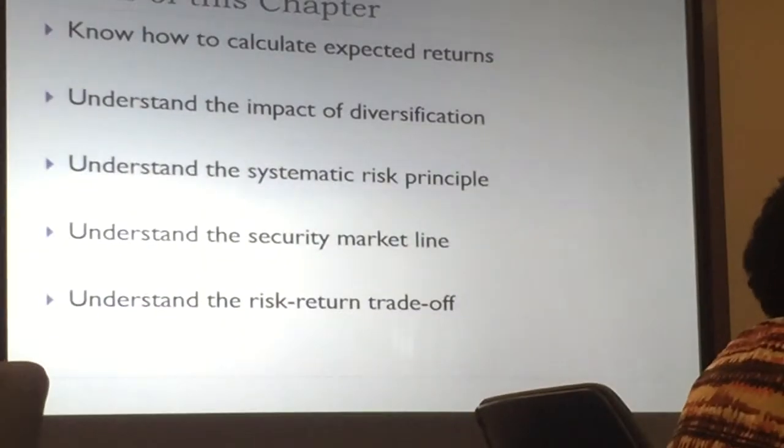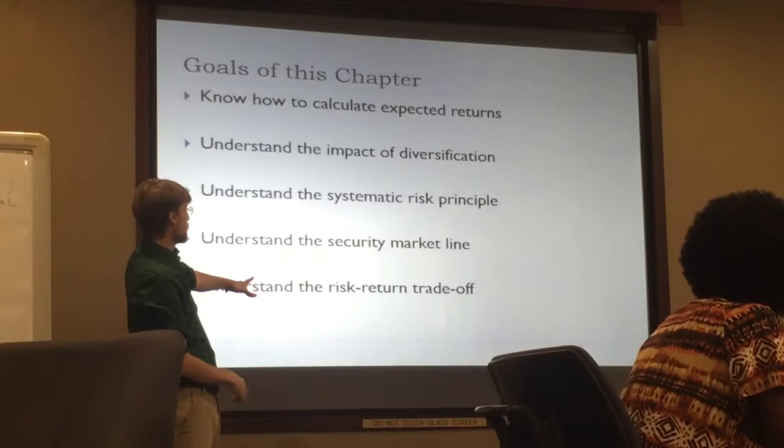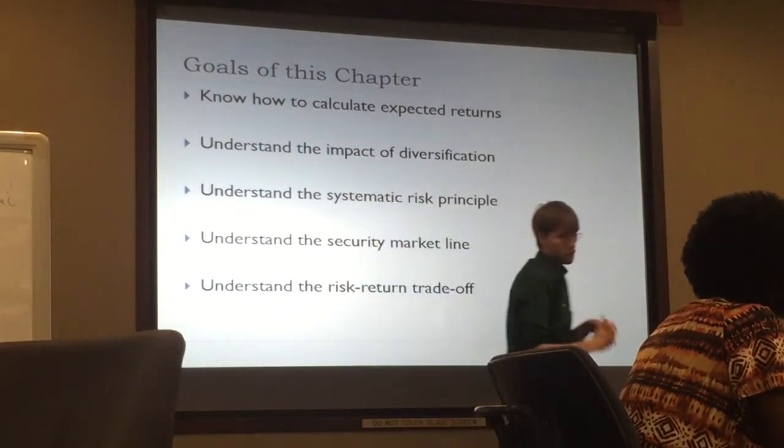We've got an expectation, so we're going to revisit some of the tools we talked about in Chapter 10. Then we'll move on and talk about the different types of risks that we face. We'll move on to the discussion of systematic versus unsystematic risks, and how much we can do about each type. That will lead us to the systematic risk principle, the capital asset pricing model, the security market line, and ultimately the risk-return trade-off.